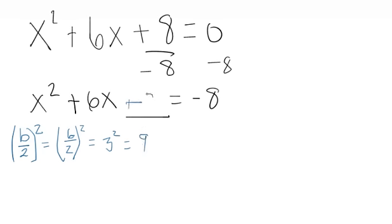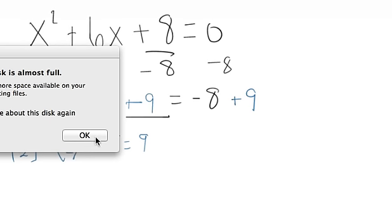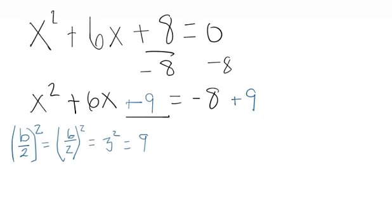And so we're going to add 9 here, and whatever I do to one side, I have to do it to the other. So we have 9 over there. Now, if I were to factor it, what two numbers multiply and give me 9 but add and give me 6? You're going to say it's 3 and 3.